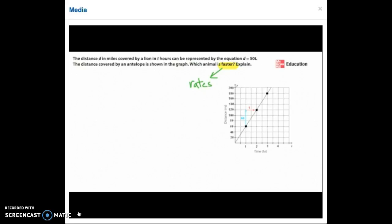So let's talk about the lion first. The distance d in miles covered by a lion in t hours can be represented by the equation d equals 50t. I know that distance divided by time is equal to rate. So if I divide both sides of this equation by t,